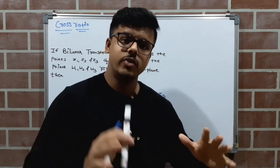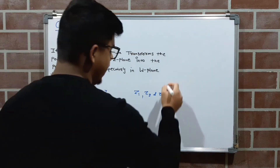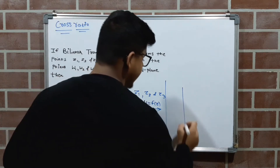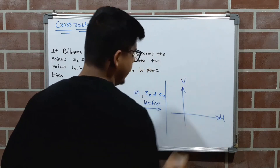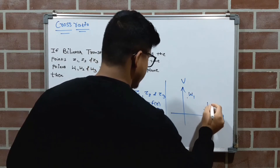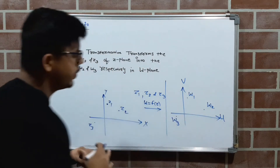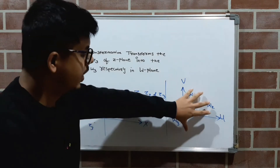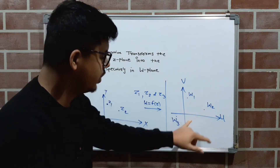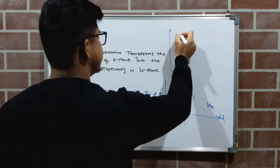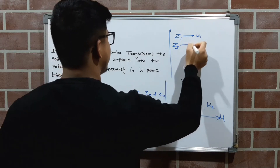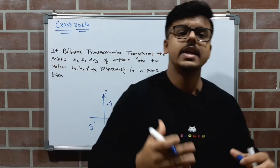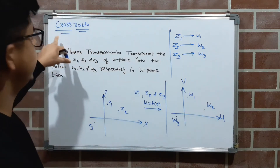In the W plane you get W1, W2, and W3 corresponding to Z1, Z2, and Z3 respectively. After performing the transformation W = F(Z) on the three points in the Z plane, you obtain the corresponding points in the W plane: W1, W2, W3. So Z1 corresponds to W1, Z2 corresponds to W2, and Z3 corresponds to W3.